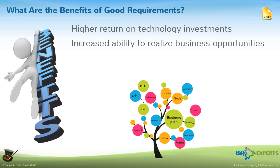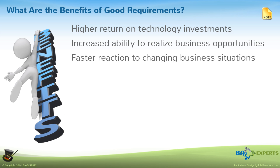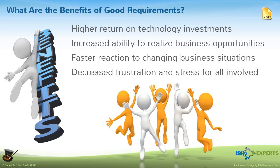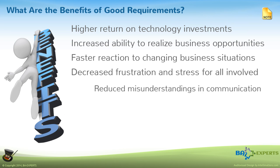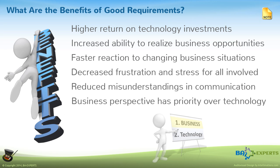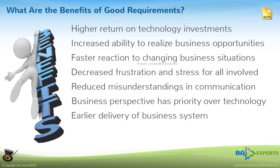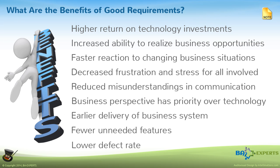If we based the software on good requirements, the business could also react more quickly as the business environment changed. That would, in turn, reduce the levels of frustration and stress for everyone from the boardroom to the bathroom. If the requirements were doing their job, they would improve communication among the stakeholders and thereby reduce misunderstandings. Actually, giving the business side priority over the technology side might sound like risky business from the IT perspective, but for the business community, this might actually right the ship and restore order to their world. Compared with all of the above-mentioned benefits, the final three — earlier delivery, fewer unneeded features, and a lower defect rate — almost seem trivial.